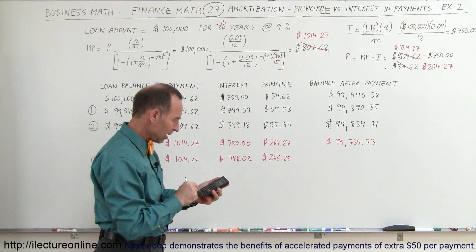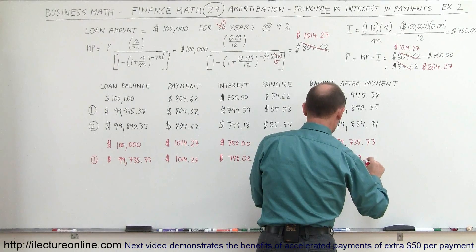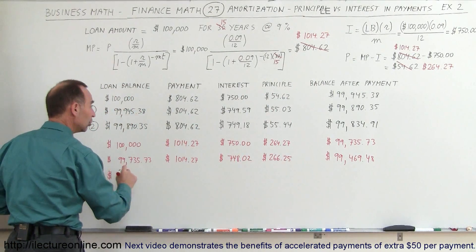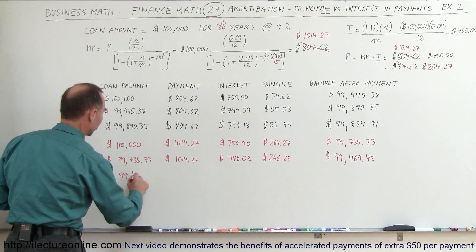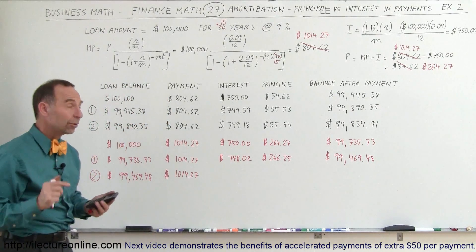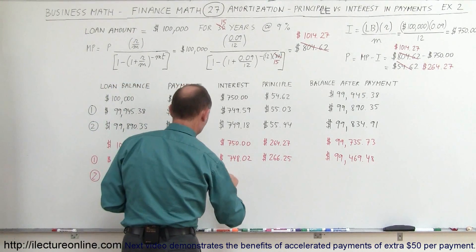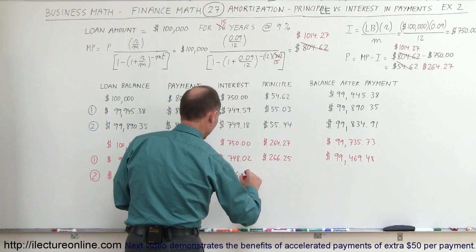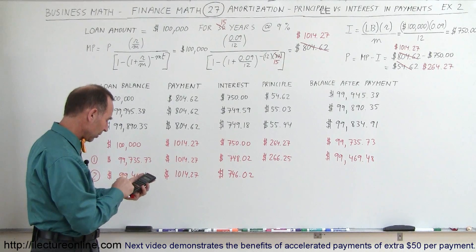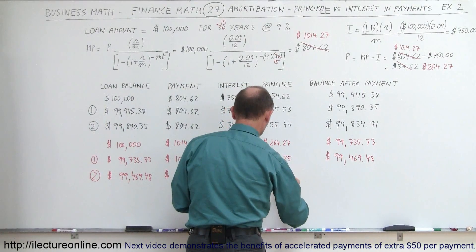Subtracting that from the balance of $99,735.73, after two payments the loan balance has dropped to $99,469.48 — you can see how much more quickly the loan balance decreases. The payment is still $1,014.27. We take the new loan balance, multiply by 0.09 divided by 12, and now only $746.02 of that payment will go to interest.